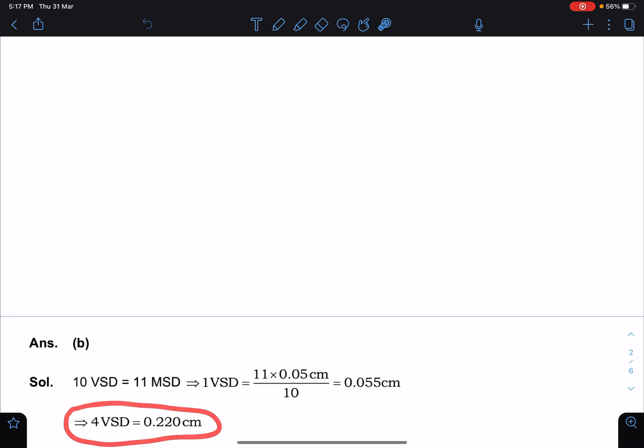So from here we are getting this value as 0.055 centimeter. Now fourth vernier scale division is matching with this, so we will be getting directly this idea from here, and that is corresponding to 0.220 centimeter.